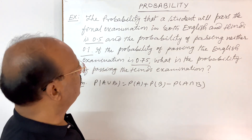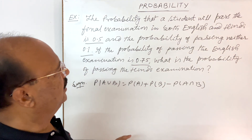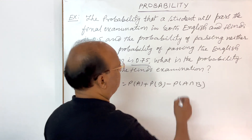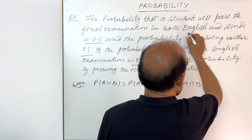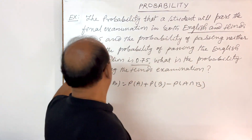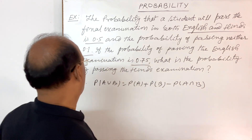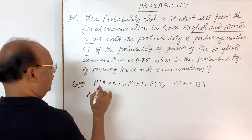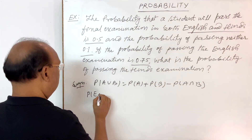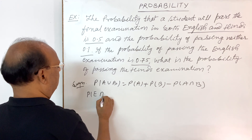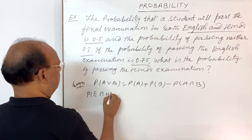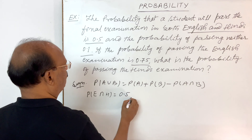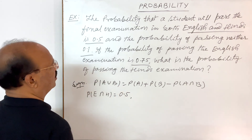First of all, let us see what is given. The probability of passing both English and Hindi — that is, P(English intersection Hindi) — is 0.5.